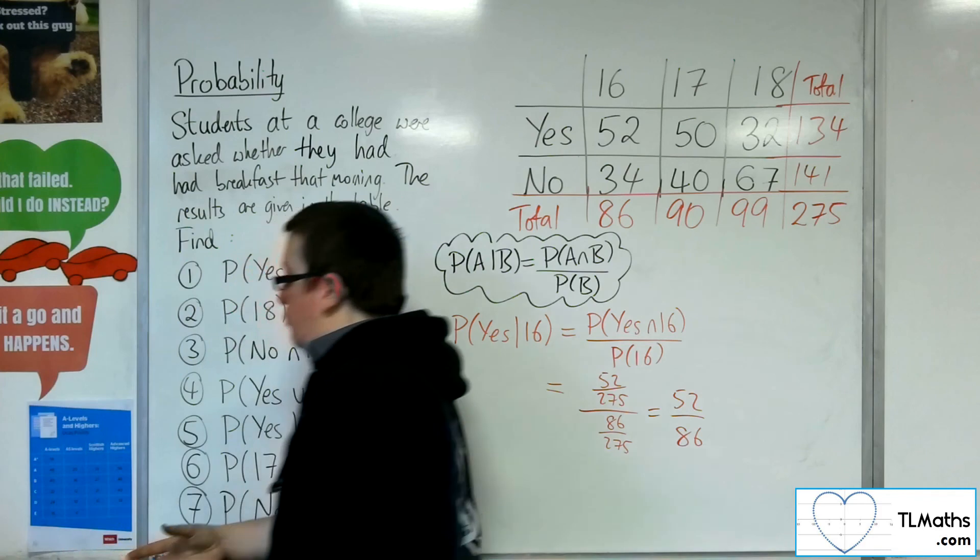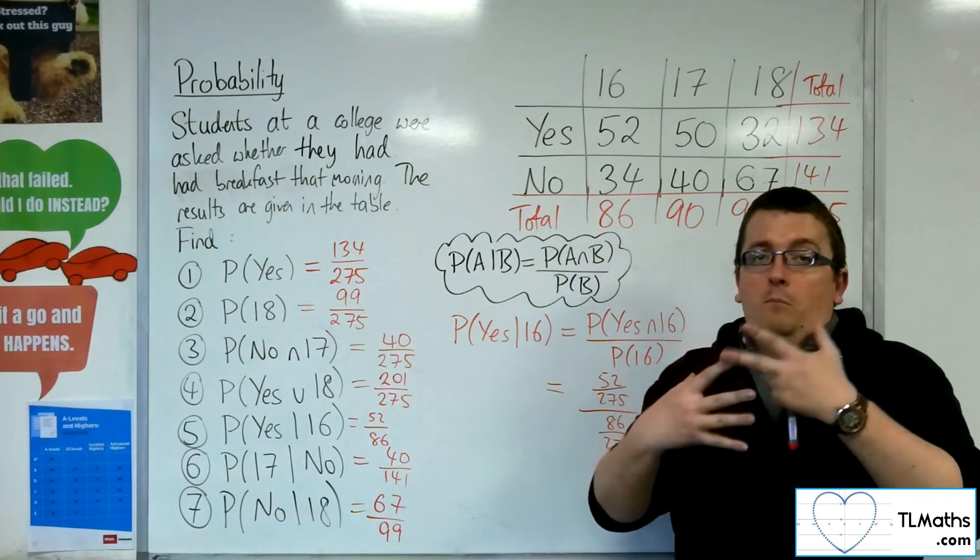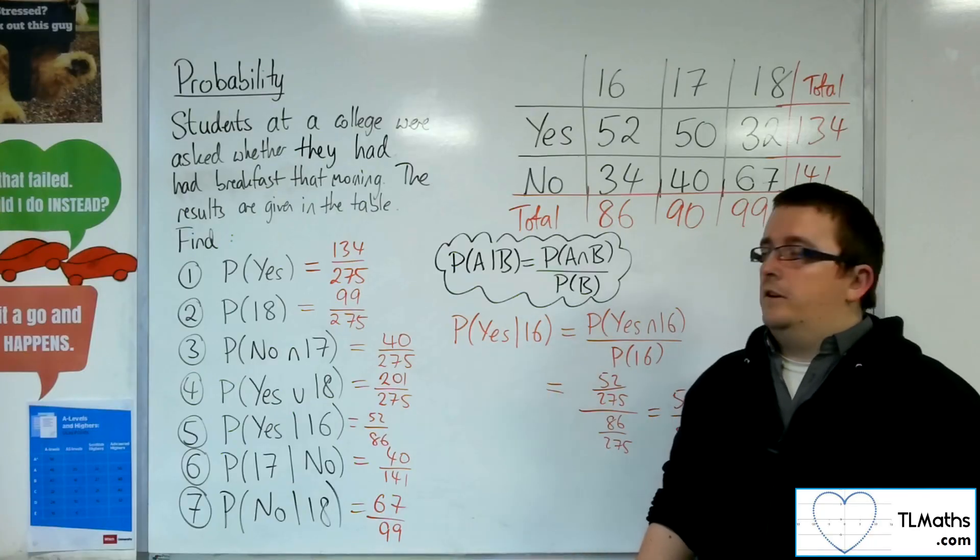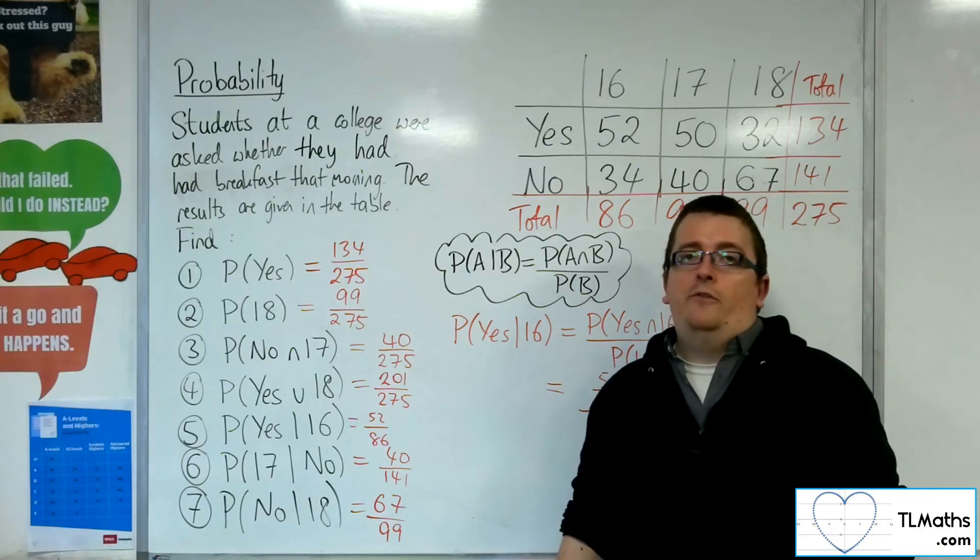So finding conditional probabilities from a two-way table is actually very straightforward. More straightforward than a tree diagram, certainly. Okay, so you really don't need to use the formula for this. You can just read them off.